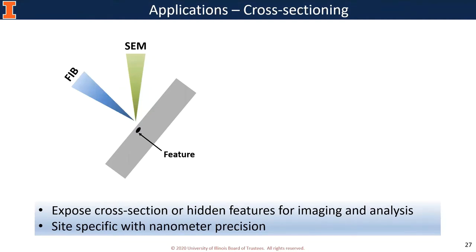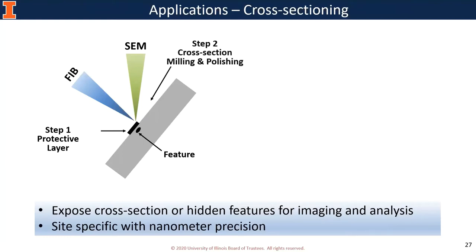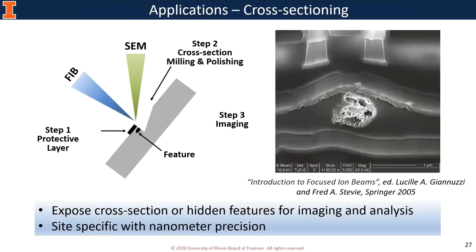The most popular application of FIB is cross-sectioning. Through cross-sectioning, features hidden underneath the sample surface can be revealed, imaged, and analyzed. Compared with conventional cross-sectioning methods, FIB allows site-specific cross-sectioning which cannot be done with conventional methods. Cross-sectioning usually starts with depositing a protective layer to the sample surface using e-beam or ion beam. Then we mill to expose the subsurface using a cross-sectioning pattern with the ion beam. After that, we polish or clean the cross-section surface with a smaller ion beam, and then image or analyze it.